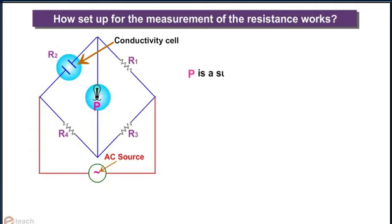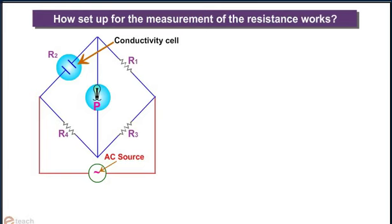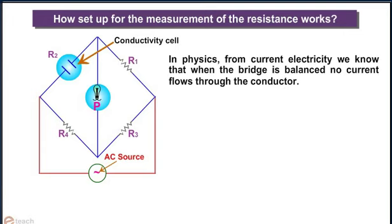Where P is a suitable detector. The bridge is balanced when no current passes through the detector. In physics, from current electricity, we know that when the bridge is balanced, no current flows through the conductor. That is R2/R4 = R1/R3. On simplifying, we get R2 = (R1 × R4)/R3.